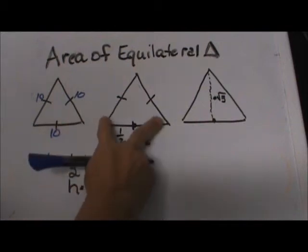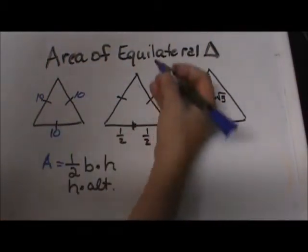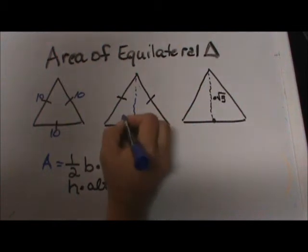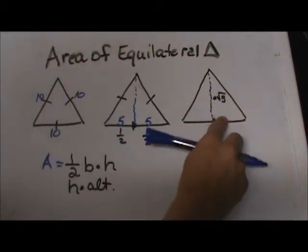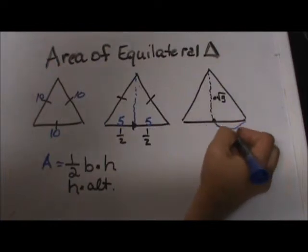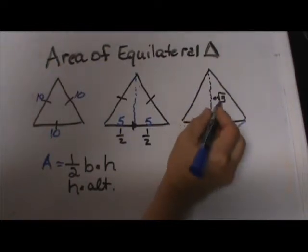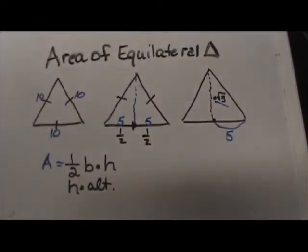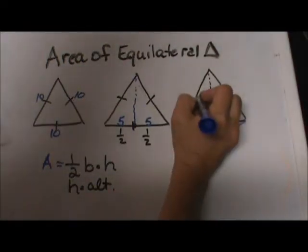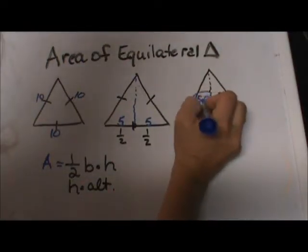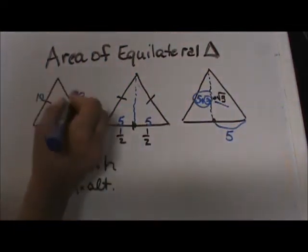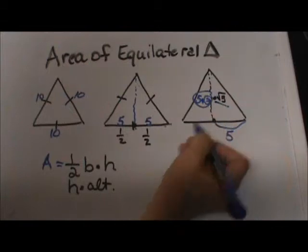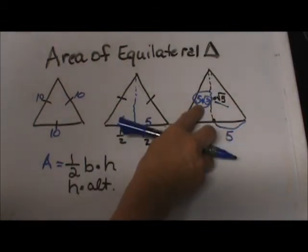First, you take the base and you split it in half when you draw this altitude down. This side is 5 and this side is 5. Then you take that short side, this leg right here that is 5, and you multiply it by the factor of the square root of 3. That just comes back to your 30, 60, 90 rules. So that means this triangle that has each side of 10 has half the side of 5 and so the altitude is 5 square root 3.